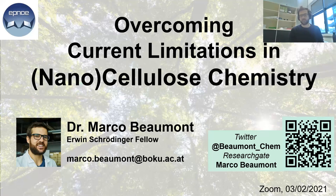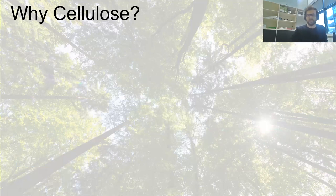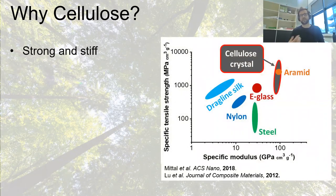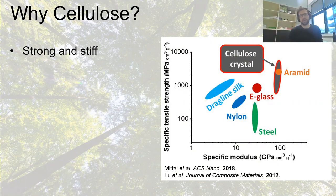First I would like to start with my motivation — why am I working with cellulose? Cellulose is the most abundant biopolymer, and it's literally true: if you look out of a window, you can see plants and trees, and the main structural polymer is cellulose, which is the reason why these plants are so strong. If you compare the mechanical performance of the cellulose crystal to biopolymers like dragline silk or man-made materials like glass fibers, nylon, and steel, we can see that cellulose outperforms them. Of course we're seeing the properties of a crystal, so it's still challenging to scale these properties into a material, but I think we're on a good track.